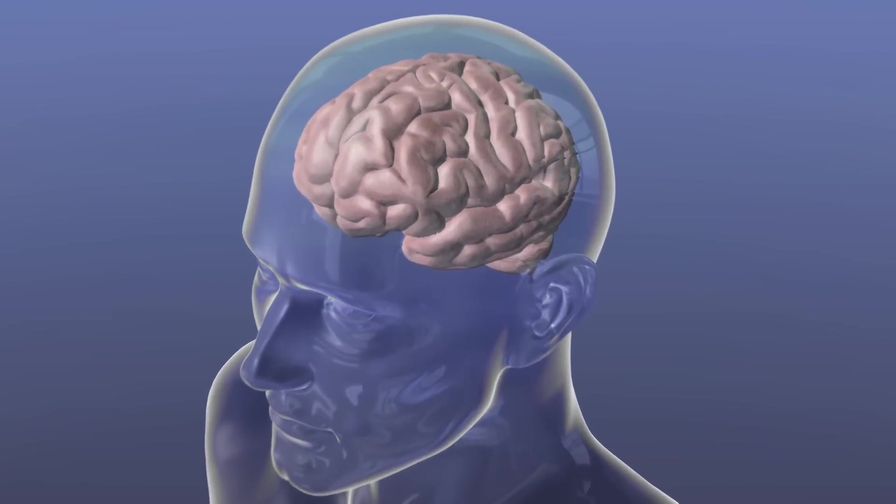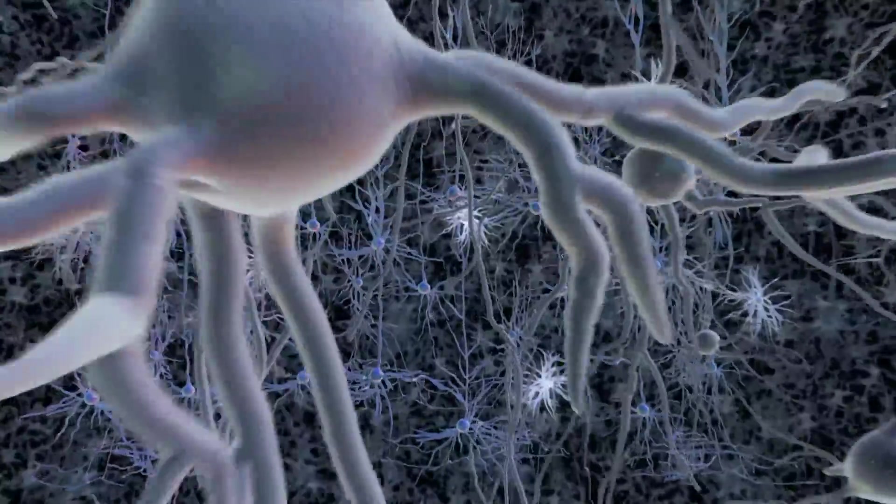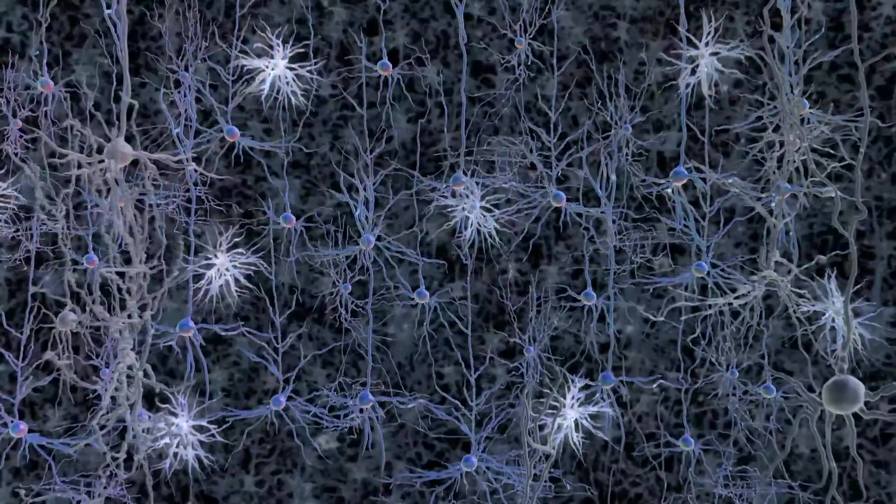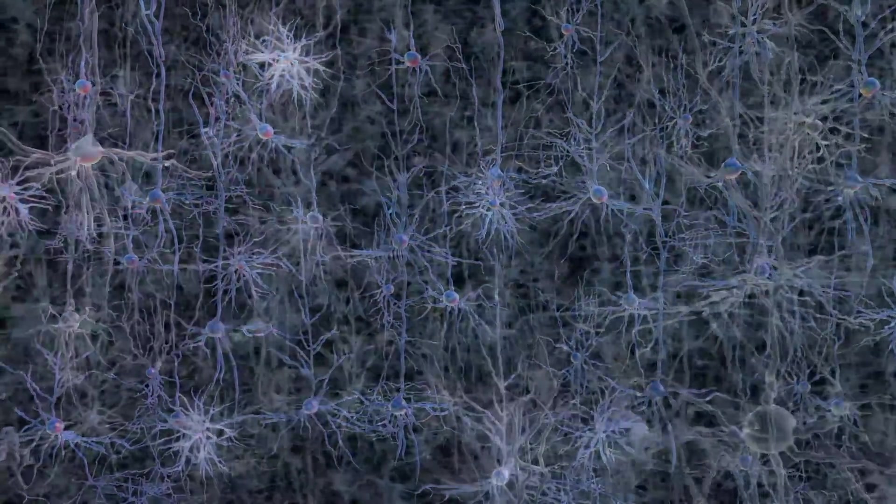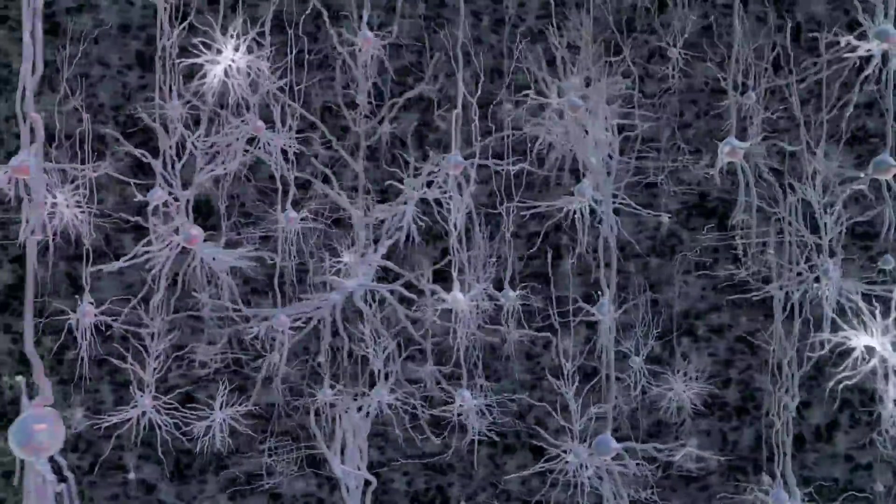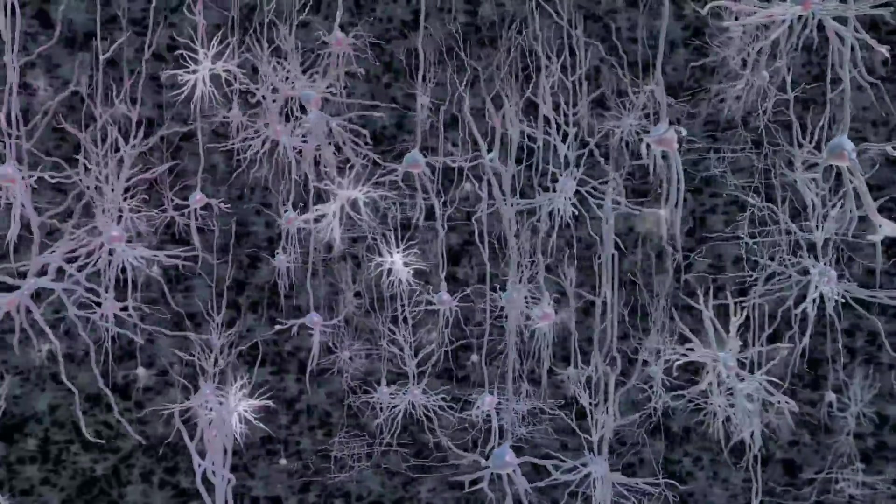The brain is a complex circuit made out of hundreds of billions of cells called neurons, each of which communicates with thousands of others. Each neuron receives information from upstream neurons, computes an electrical signal within it in milliseconds, then triggers the transmission of information to downstream neurons.